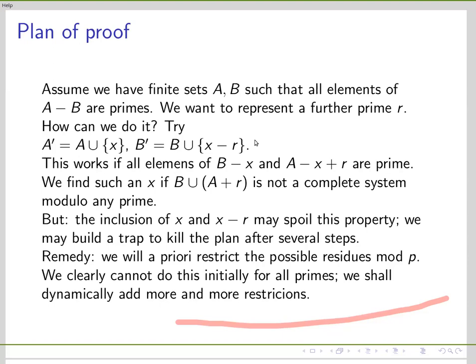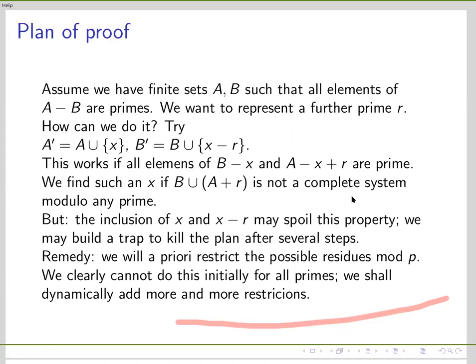Under the previous assumption, this can be done if the union of b and the translation of a by r does not form a complete system of residues modulo any prime. However, life is not that simple, because if we adjoin this x and x minus r, it can happen that in the next step this condition is void for some other prime, or there is a trap that will kill the process after 10 steps, and we must take care to avoid this.